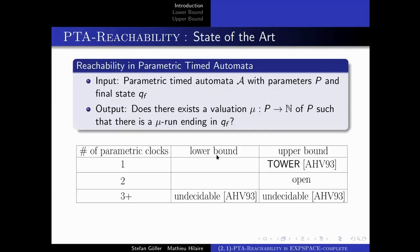The problem we are concerned with is that of reachability. Given a parametric timed automaton with parameters P and some target state Qf, does there exist a valuation of the parameters to the naturals such that there exists a run ending in the final state Qf?